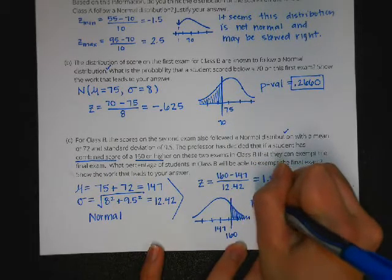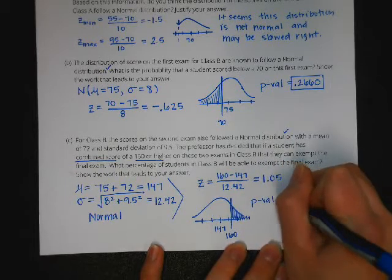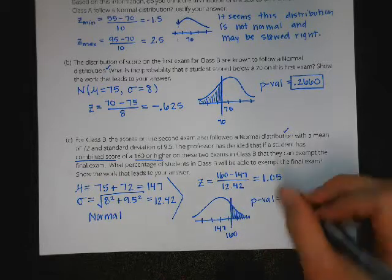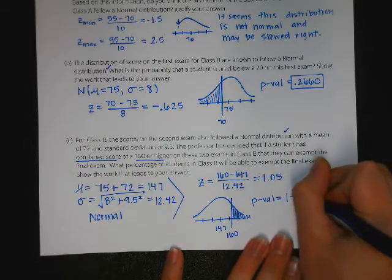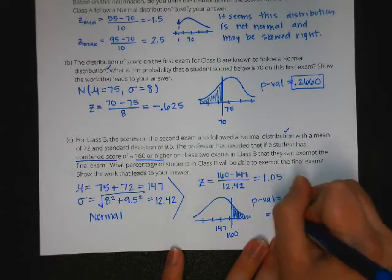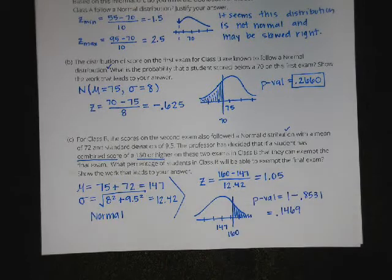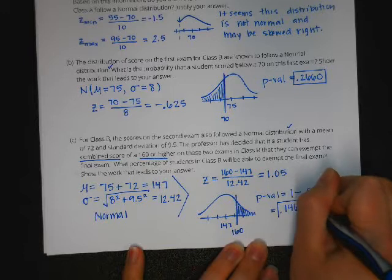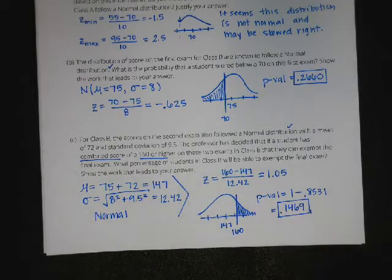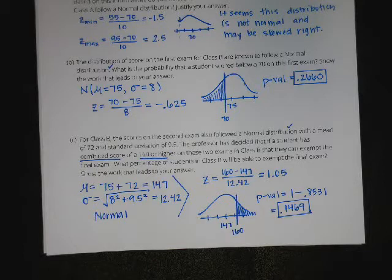In that case, my p-value is going to be 1 minus the probability I find in my normal chart for 1.05, which is 0.8531. So 1 minus that gives me 14.69%, or as a decimal 0.1469. So that proportion, about 15% of his students, which seems reasonable, would be able to exempt the final exam if they did well enough on their other two tests.